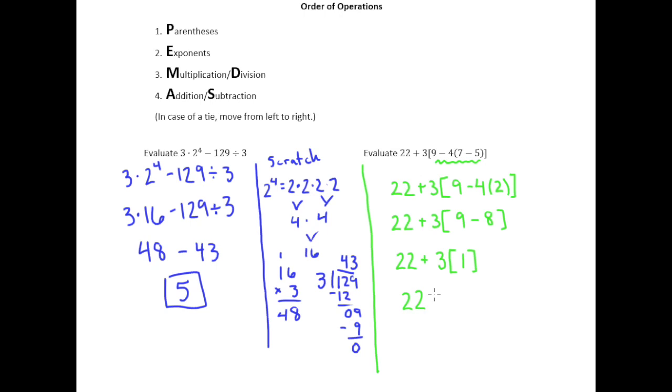So 22 plus 3 times 1 is 22 plus 3, which is 3. And then finally finishing this problem off we have 25.